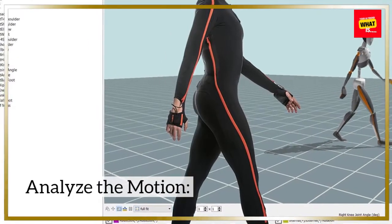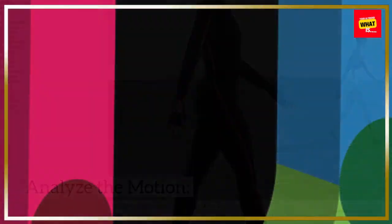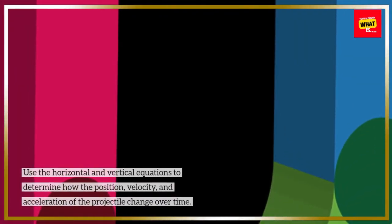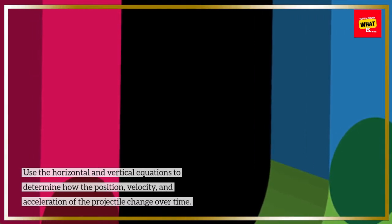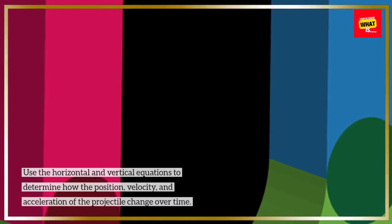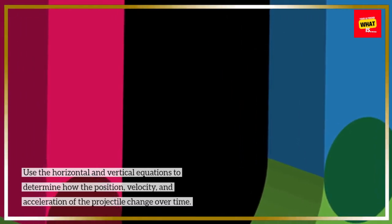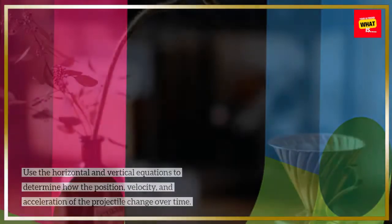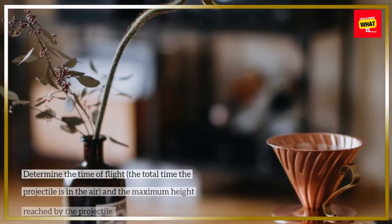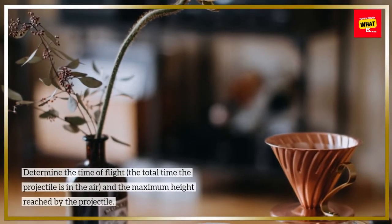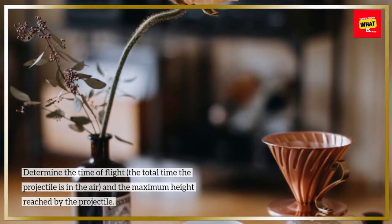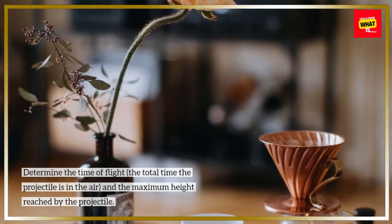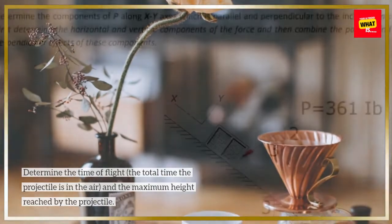Analyze the motion: use the horizontal and vertical equations to determine how the position, velocity, and acceleration of the projectile change over time. Determine the time of flight — the total time the projectile is in the air — and the maximum height reached by the projectile.